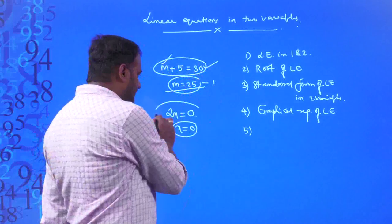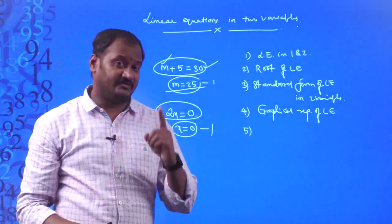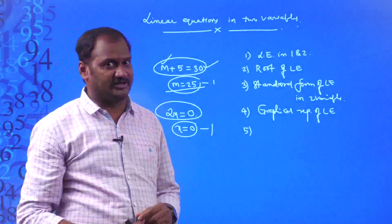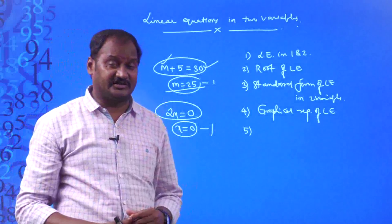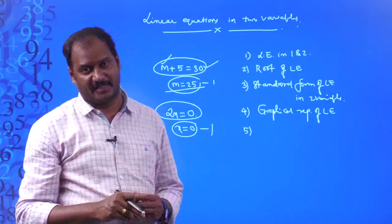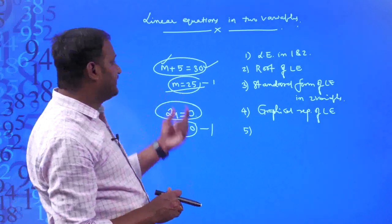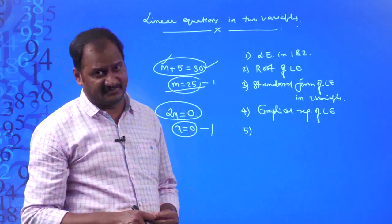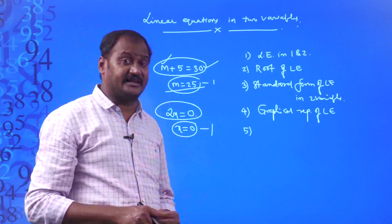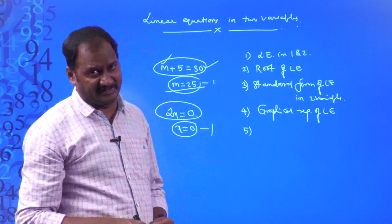Every linear equation in one variable has only one solution — this is called a unique solution. The other name for that solution is a root of the linear equation in one variable.